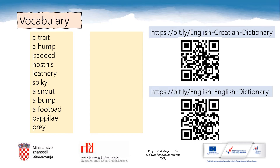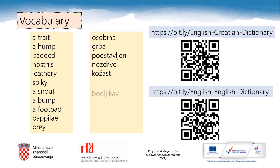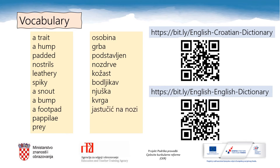And let's check. A trait — je osobina. A hump — grba. Padded — podstavljen. Nostrils — su nozdrve. Leathery — kožast. Spiky — bodljikav. A snout — njuška. A bump — kvrga. A footpad — jastučić na nozi. Papili — su papile. Prey — je plijen. Good job, everyone.